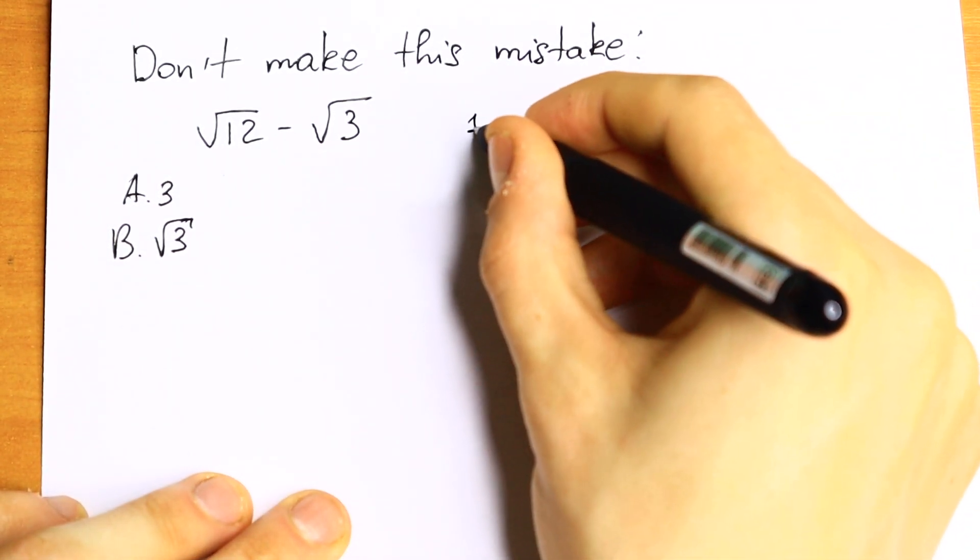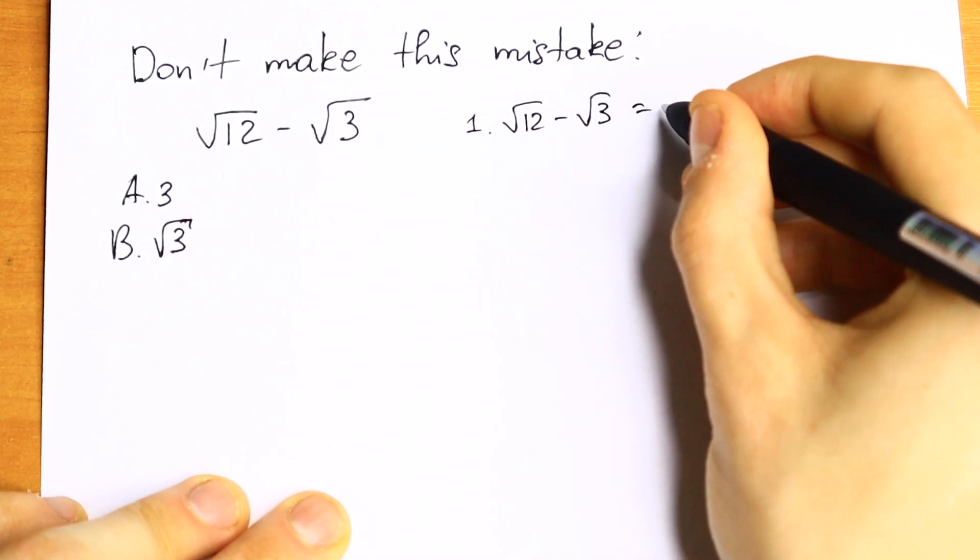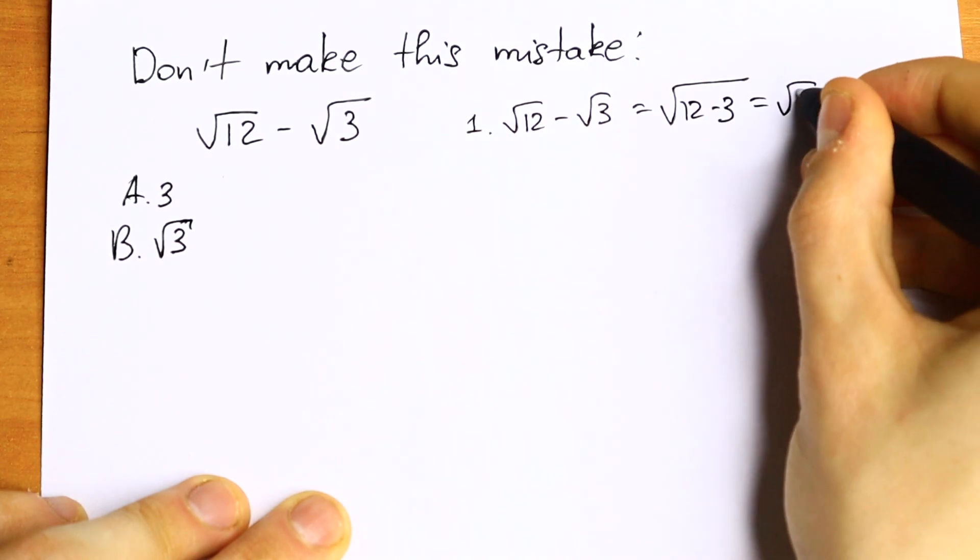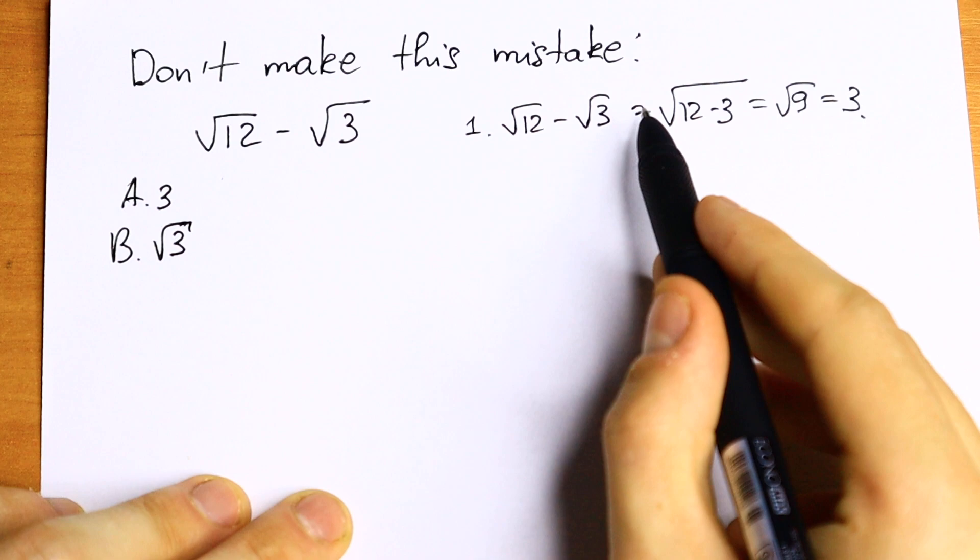The first way to solve it is to write square root of 12 minus square root of 3. We can write as square root of 12 minus 3, and it will equal square root of 9, which equals 3. On the first side this step is correct.